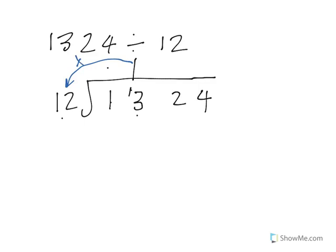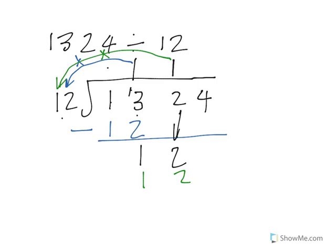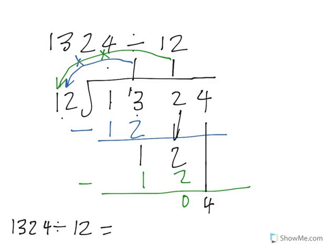1 times 12 is 12, and we take that away: 13 minus 12 is 1. We bring down the 2, giving us 12. 12 goes into 12 once; 1 times 12 is 12, take that away, giving 0. We bring the 4 down; 12 into 4 doesn't go. So we put a 0 up there, giving us 110 remainder 4.